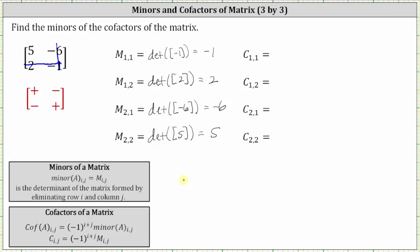Now let's find the cofactors of the matrix. Cofactor a sub i comma j, sometimes referred to as just c sub i comma j, is equal to negative one raised to the power of i plus j times the corresponding minor.